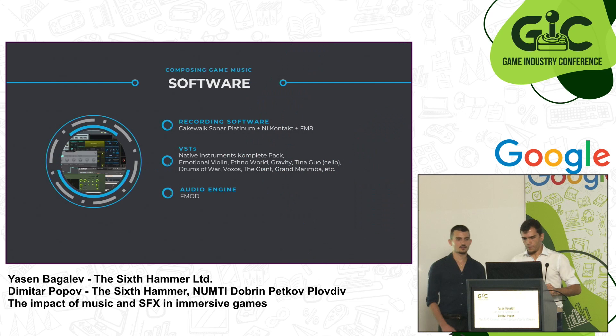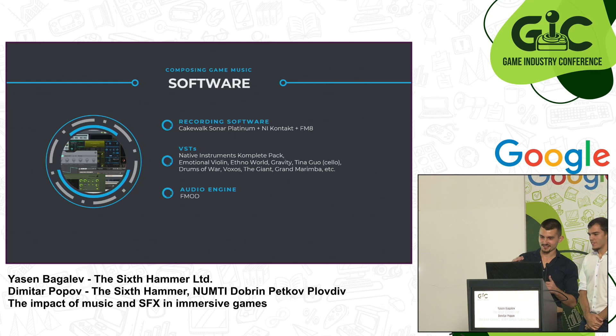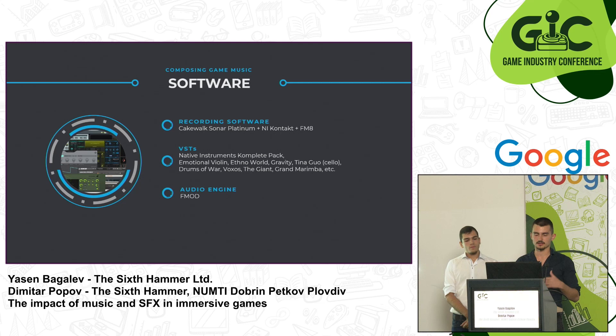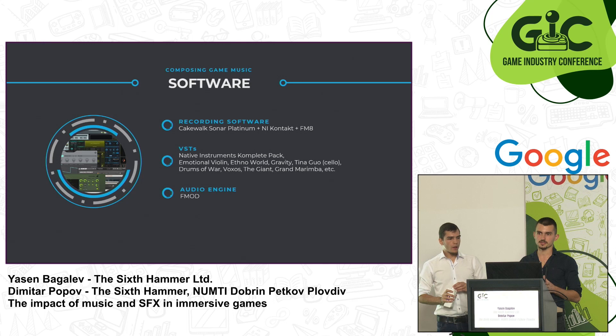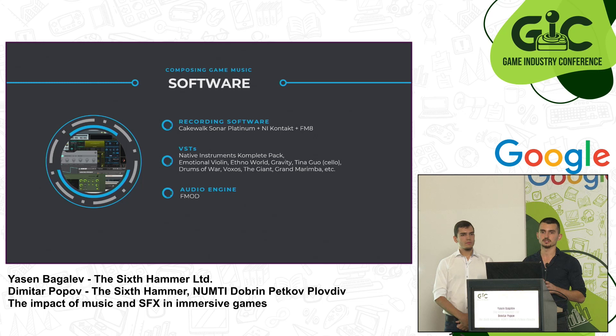Here you can see the software we used for the audio of Moolander. We recorded the music with Cakewalk Sonar Platinum and popular libraries like Kontakt and FM8. We have also listed some of our favorite VSTs and VST packs that you should definitely check out. Lastly, we are using the FMOD audio engine, which is very powerful and has very good integration with Unity. And with that we conclude our talk — now it's time for your questions.